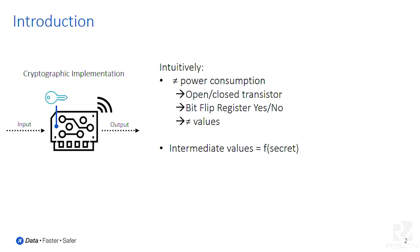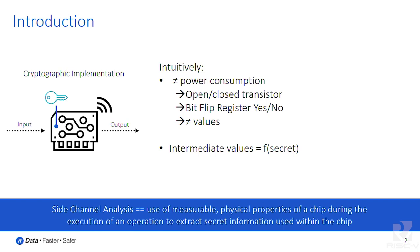In side-channel analysis, the goal is to use measurable physical properties of a chip during the execution of an operation to extract secret information being used on the chip. This can be power consumption or electromagnetic radiation. Timing was mentioned earlier — so these are all measurable physical properties that can be used to extract secrets.